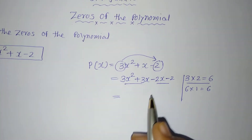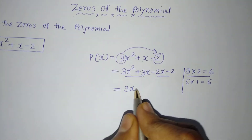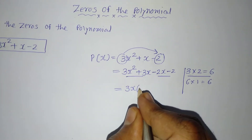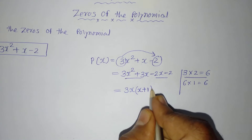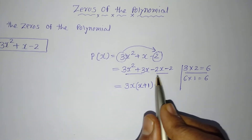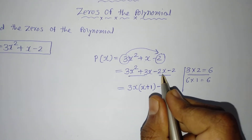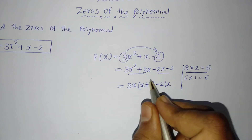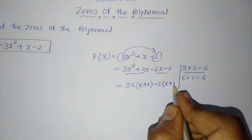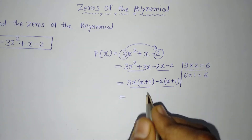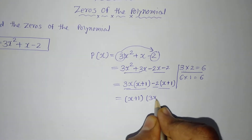Now we need to take common factors. From the first two terms, 3x² + 3x, both 3 and x are common, so 3x is taken out, leaving (x + 1). From the last two terms, −2x − 2, we take −2 as common — when the minus sign is taken out both signs change — leaving (x + 1). So the two factors are (x + 1) and (3x − 2).